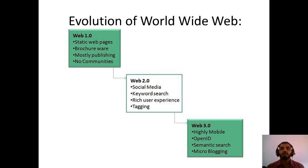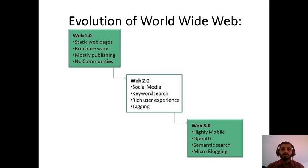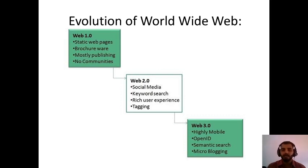With reference to Web 3.0, as time passed, things shifted from laptop computers to mobile phones. Everyone wants everything on the tip of their finger, not on the keyboard. So Web 3.0 was introduced with highly mobile-configured websites developed. It has mobile-centric websites, open ID, semantic search, and micro-blogging. This is the evolution with reference to World Wide Web.